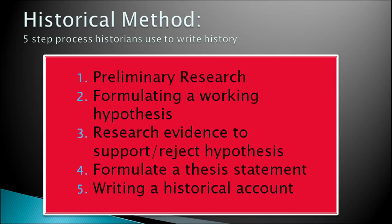When we talk of the economic interpretation of society, this method concentrates on the origin of capitalism, development of bureaucracy, and economic influence — that is, power, capitalism, and bureaucracy. This was the economic base to study the society. There are five steps historians use: preliminary research, formulating a working hypothesis, researching evidence to support or reject the hypothesis, formulating a thesis statement, and writing a historical account.